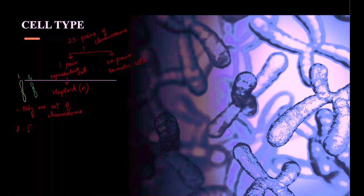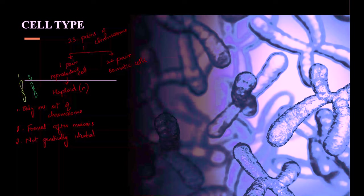Haploid cells are formed after meiosis. They are not genetically identical to the parent because in haploid cells, crossing over is going to take place. We are going to see crossing over in detail in the meiosis section.